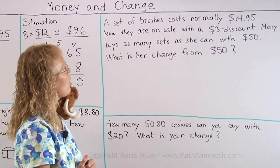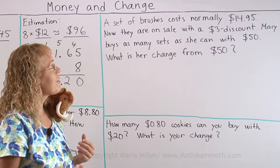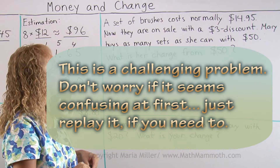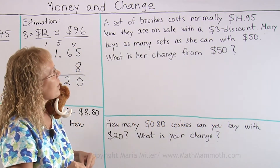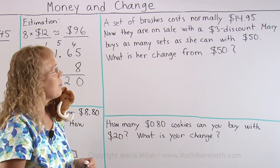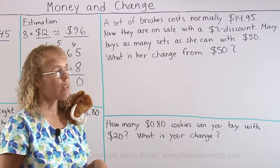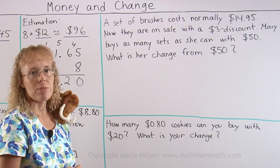A set of brushes normally costs $14.95 and is now on sale with a $3 discount. Mary buys as many sets as she can with $50. What is the change from $50?